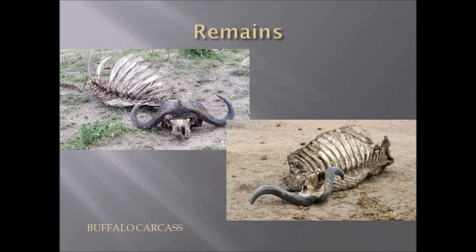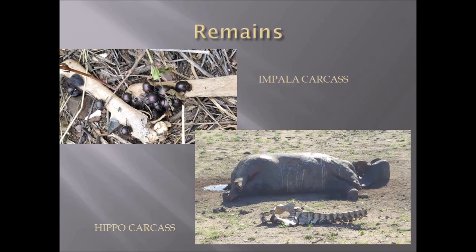There are also remains of animals, usually when they have been killed by a predator or through natural death. You have a buffalo carcass in the top left, the remains of an impala — just the legs — that have been fed on by dung beetles acting as detritivores, and a hippo carcass with white vulture droppings from birds that have been feeding on it.